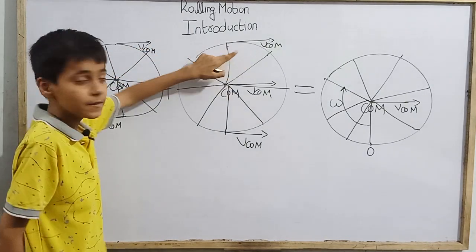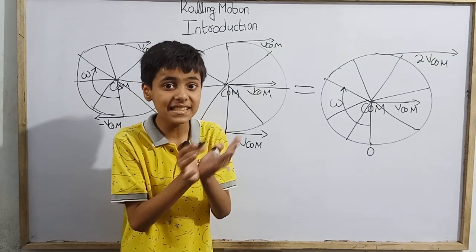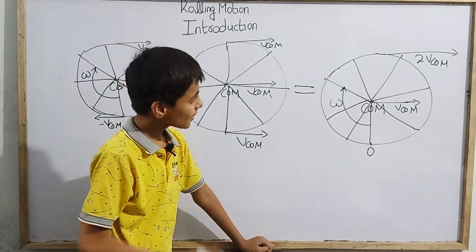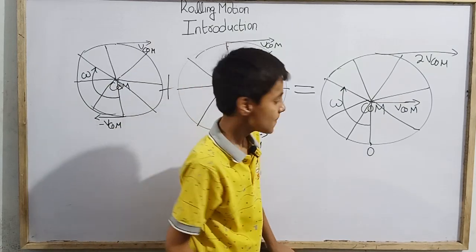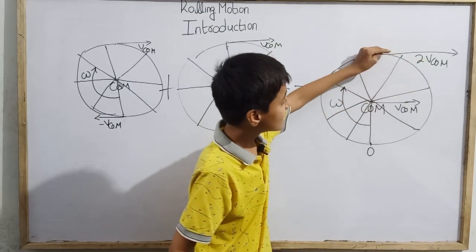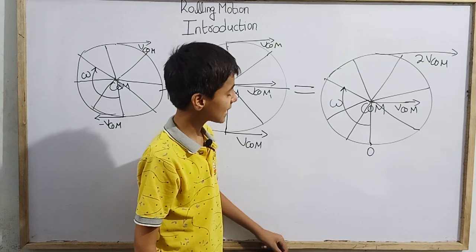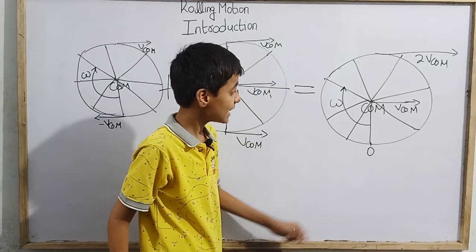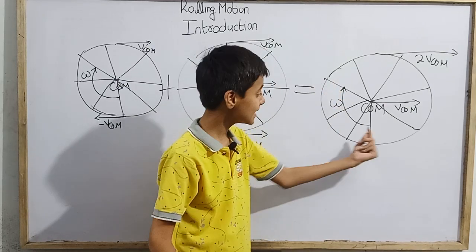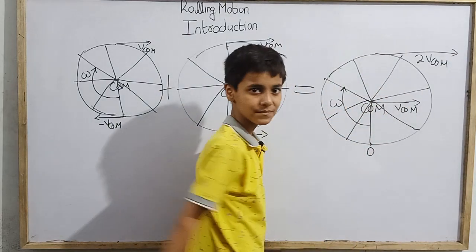At the topmost point, the speed is V_COM + V_COM = 2·V_COM. So the topmost point of a rolling wheel moves at twice the speed of the center of mass. This explains rolling motion: the downmost point instantaneously has zero speed while the topmost point has maximum speed 2·V_COM.